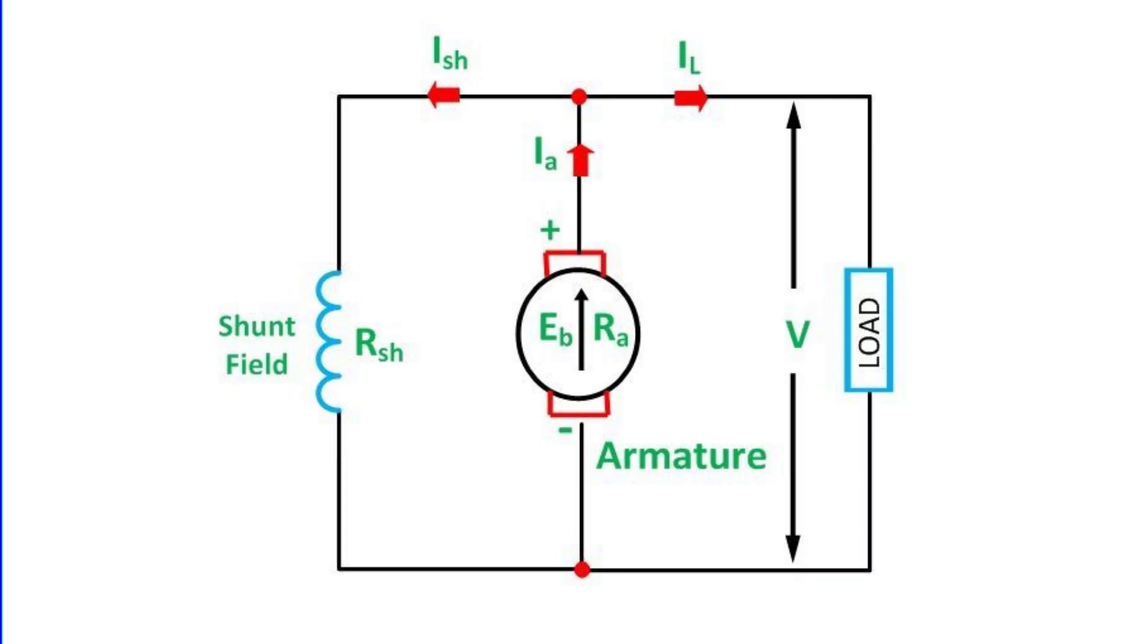This is where the shunt field winding comes into play. Connected in parallel with the armature, the shunt field winding creates an additional magnetic field that interacts with the armature's field. By adjusting the current flowing through the shunt field winding, we can control the strength of the overall magnetic field and, consequently, the generator's output voltage. But how do we determine the precise resistance needed in the shunt field circuit to achieve stable voltage generation? This is where the concept of critical field resistance emerges as a key factor in understanding and operating DC shunt generators effectively.